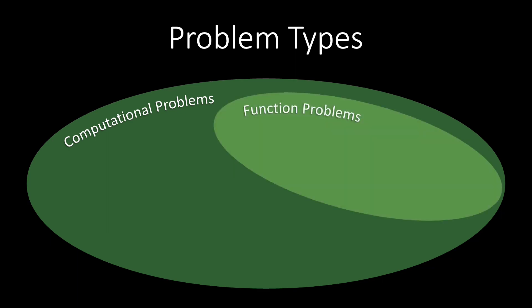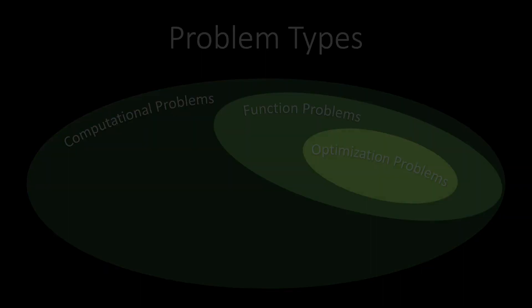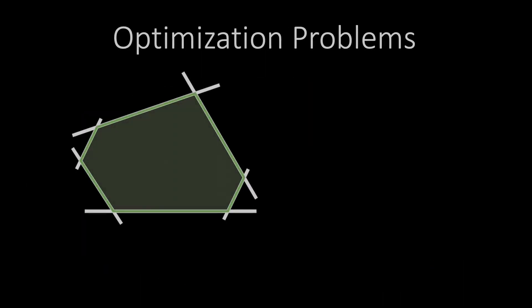Function problems are defined by a function that maps each input to a set of feasible outputs. An interesting subclass of function problems are optimization problems. In an optimization problem, we want to find the best possible output among all feasible outputs. To do this, we need a quality measure that allows us to compare different feasible solutions.